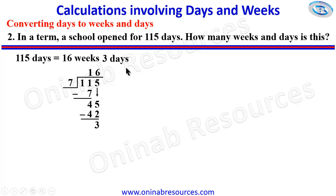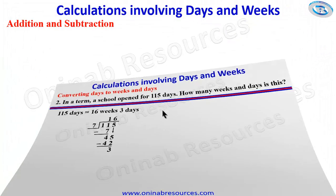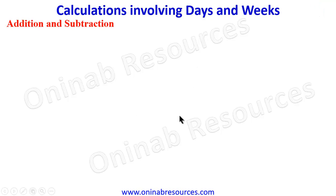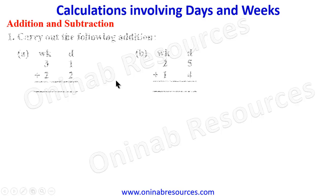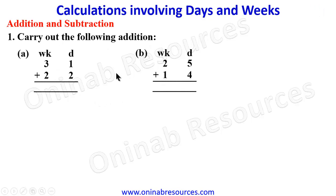So the school opened for 16 weeks 3 days. That's all for problem 2 under converting days to weeks and days. We then go to addition and subtraction of days and weeks. Starting from our first problem: carry out the following addition. A. We have weeks and days with 3 weeks 1 day to be added to 2 weeks 2 days.